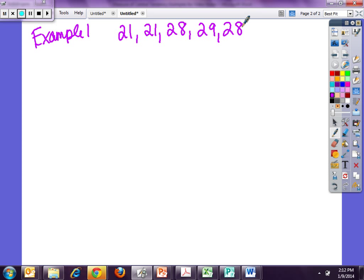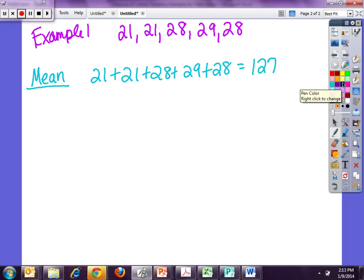The mean is the average where I take and I total the numbers in the data and I divide by the total number of numbers. So if I add 21 plus 21 plus 28 plus 29 plus 28, I get 127. 127 is not my mean. I know I could just common sense wise look and say 127 does not fall in between 21 and 29. It's nowhere even close, so I know something's not right.